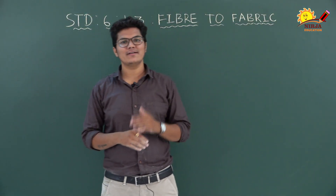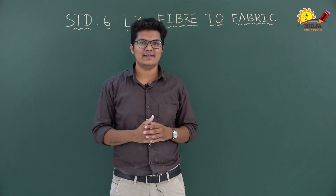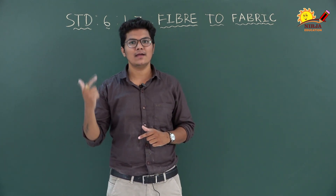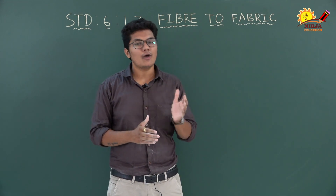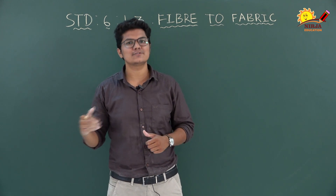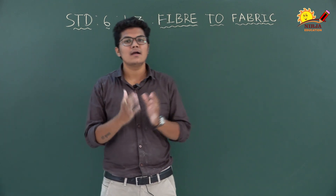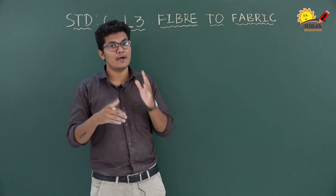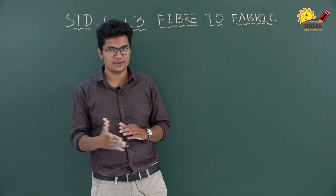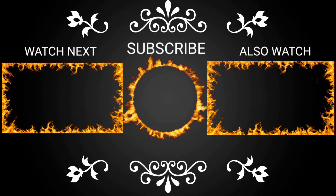So dear students, in today's video we learned about clothes and what people used to wear in prehistoric times. We also talked about fibers — there are two types: natural fibers and synthetic (man-made) fibers. Common natural fibers include cotton, coir, and jute, and we saw examples of synthetic fibers. In the next video, we will learn about the cultivation of fibers. Don't forget to subscribe and press the bell icon. Thank you, bye.